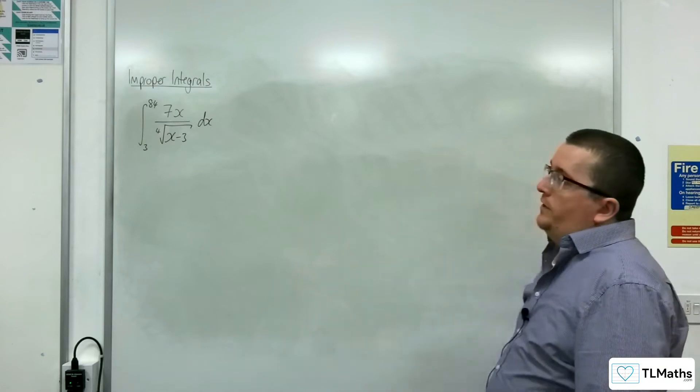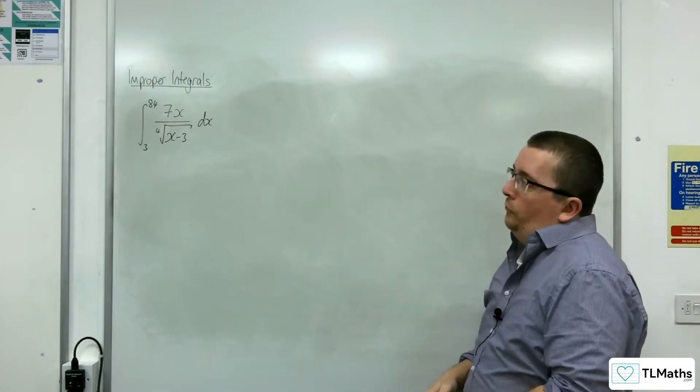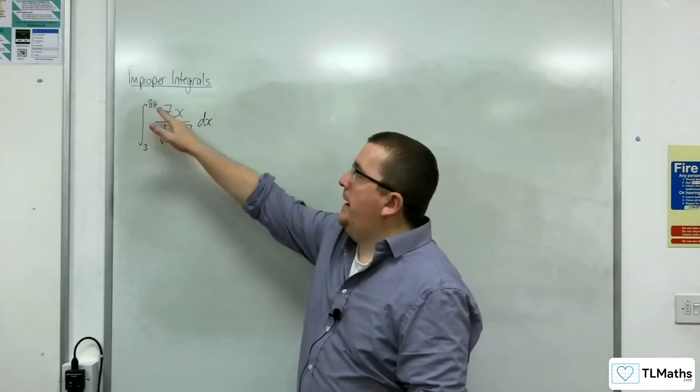In this video, we're going to be integrating 7x over the 4th root of x take away 3 with respect to x, evaluated between 3 and 84.